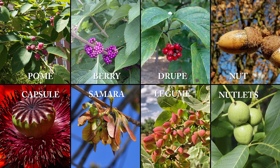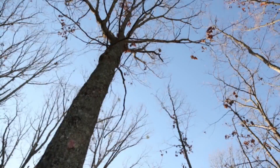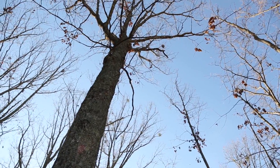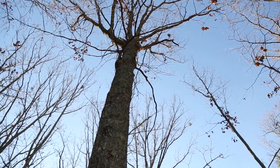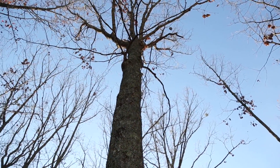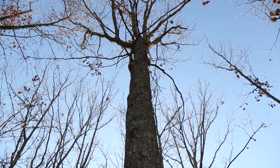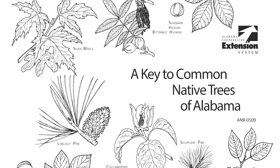Bark is observed for color and texture. Fruit is reviewed to determine type, such as pome, berry, drupe, nut, capsule, samara, legume, and nutlets. Additionally, the twig and overall form of the tree can often provide clues to the species' identity.